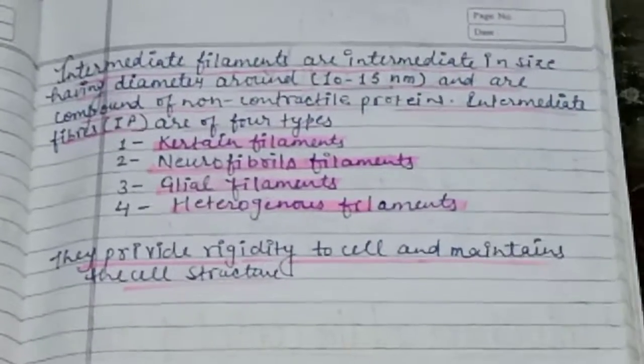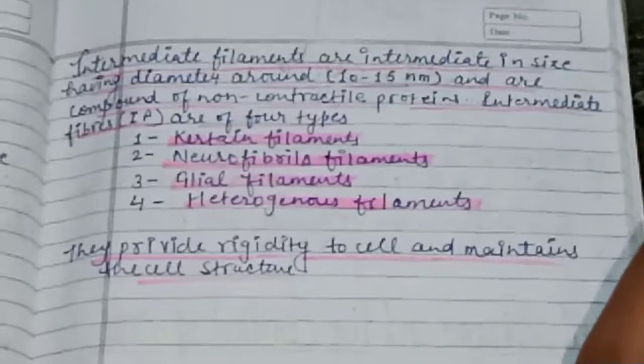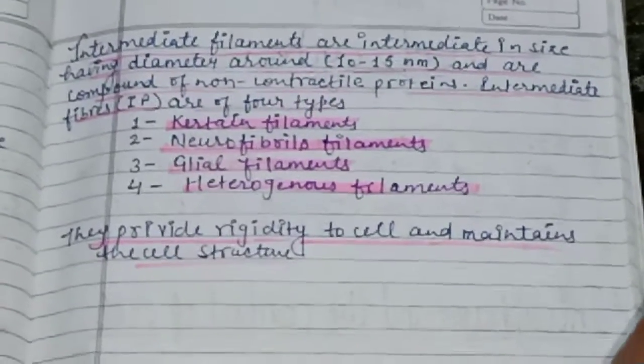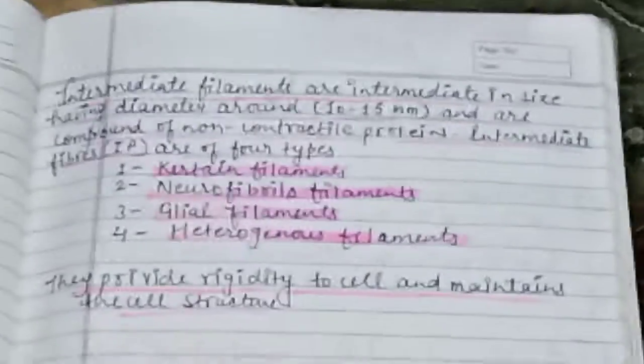Intermediate fibers are of four types: keratin filaments, neurofibrous filaments, glial filaments, and heterogeneous filaments. They provide rigidity to the cell and maintain cell structure.